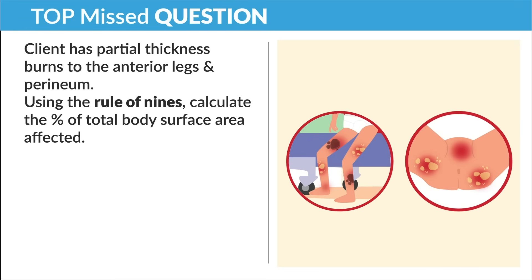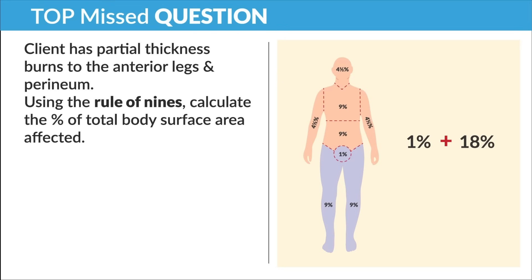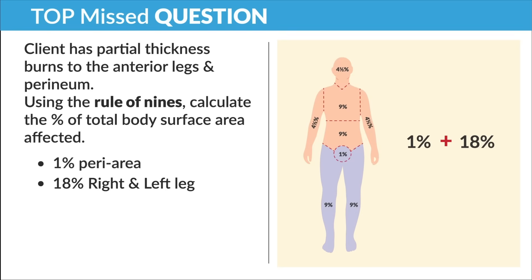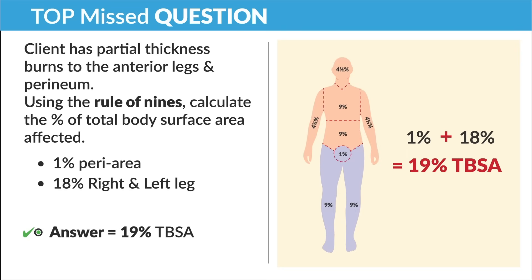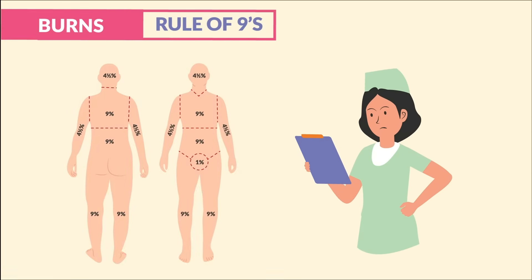The next top missed question: a client has partial thickness burns to the anterior legs and perineum — calculate the total body surface area affected. Anterior legs and perineum: 9% for each anterior leg gives 18% for both legs, since only the front is affected, plus 1% for the perineal area. The answer is 18 plus 1 equals 19%.